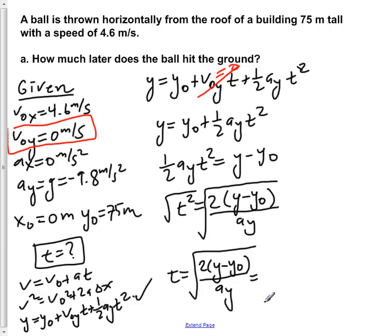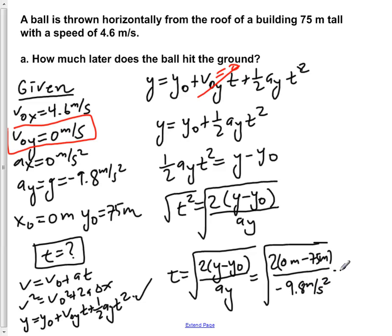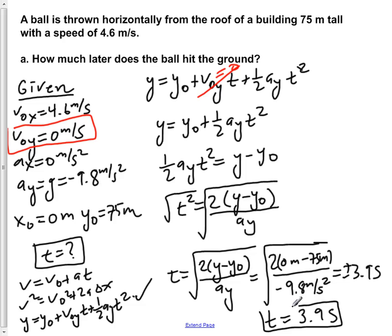Plugging in our values, t equals the square root of 2 times (0 meters minus 75 meters) — our final height is 0 when we hit the ground and our initial height is 75 meters — divided by negative 9.8 meters per second squared. This gives us plus or minus 3.9 seconds. Because time must be positive, t equals 3.9 seconds.